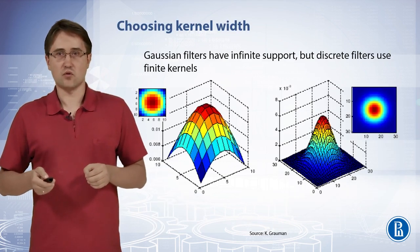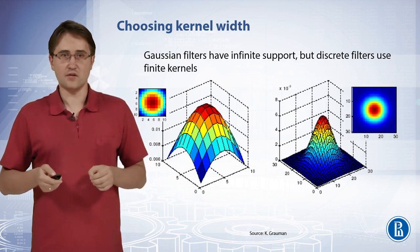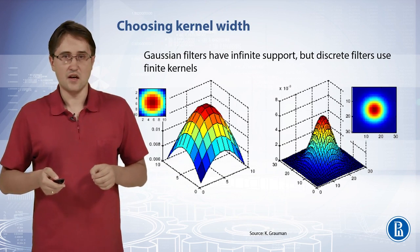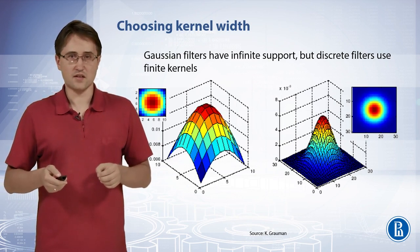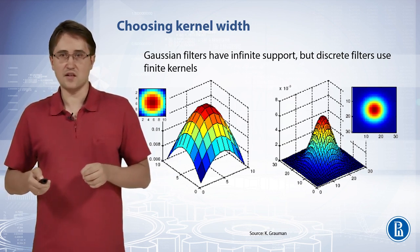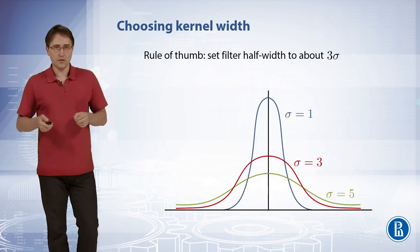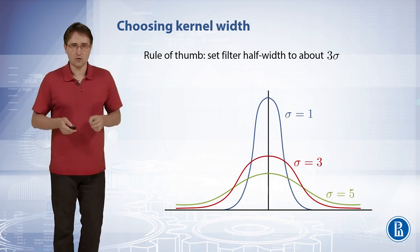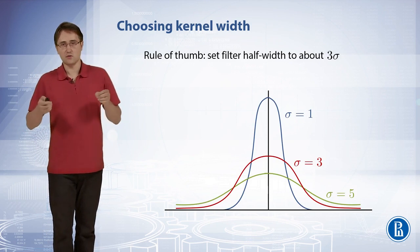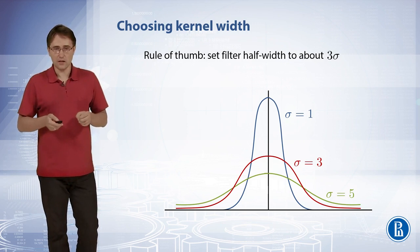Gaussian filters have infinite support, but discrete filters use finite kernels. For the same sigma, we can build filters of different sizes. For sigma equals 5, two filters with sizes 10 by 10 and 30 by 30 are given. Notice that for the second filter, the weights near the boundaries of the filter are close to zero. As a general rule of thumb, we usually set the Gaussian filter half-width to about 3 sigma, so the total size of a Gaussian filter equals 6 sigma. In this case, all weights near the edges of the filter are close to zero.